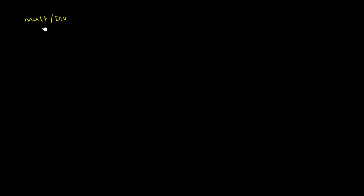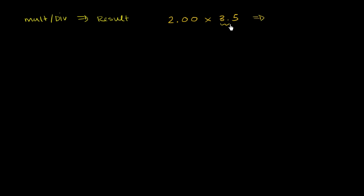We saw in the last video that when you multiply or divide measurements, your result can only have as many significant digits as the thing with the smallest number of significant digits. So as a quick example, if I have 2.00 times 3.5, my answer can only have 2 significant digits — this has 3, this has 2. 2 times 3.5 is 7.0, because we can have 2 significant digits, and that was the smallest number in all the things we were multiplying.